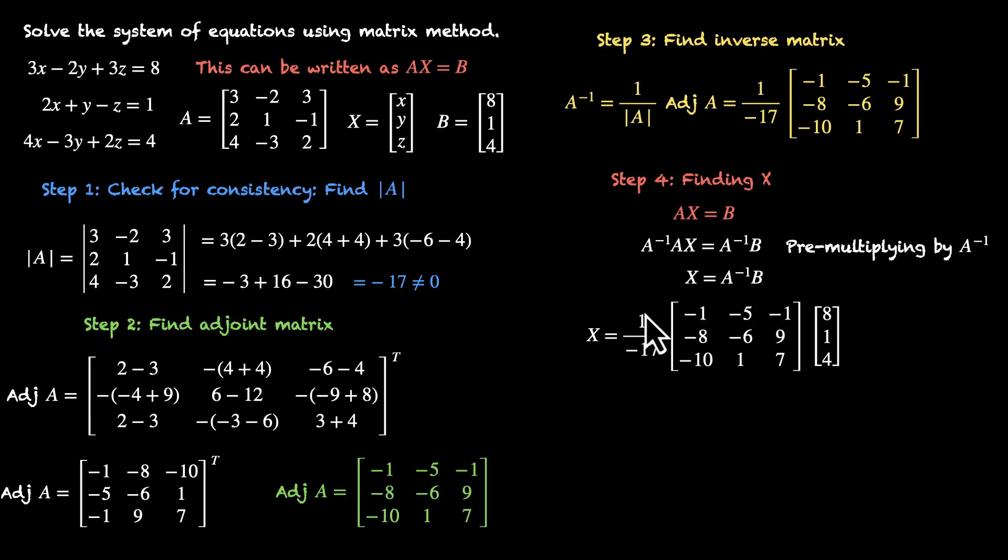So our job is to multiply A inverse with B now. X is going to be A inverse times B, that's 8, 1, 4. So now we can multiply these two. X is -1 by 17 times, let's see what we have. -1 times 8 is -8, this is -5, this is -4. So the first term is -8, -5, -4. Next element, that's going to be -64, -6, plus 36. And last will be -80, plus 1, plus 28. Let's simplify this. This becomes 8 + 9, that's 17, with a negative sign. So -17. -64 minus 6 is -70. 70 - 36 is 34, with a negative sign. So that's -34. -80 + 29, that's 30 - 80 is 50 minus, and then 1. So -51.